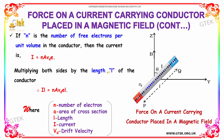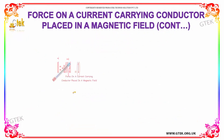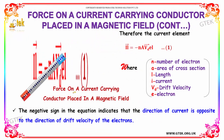Multiplying both sides by the length L, we get I·L = N·A·VD·L. Therefore, the current element IL vector is equal to minus N·A·VD·e·L. The negative sign in the equation indicates that the direction of current is opposite to the direction of the drift velocity.